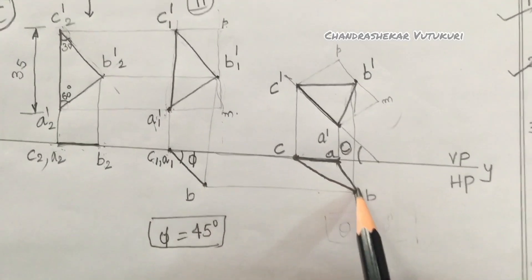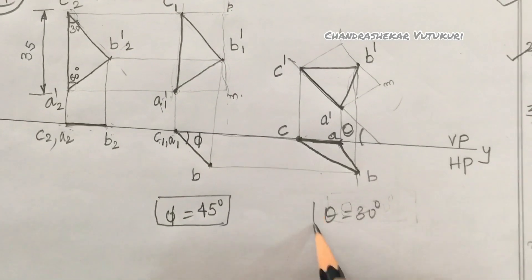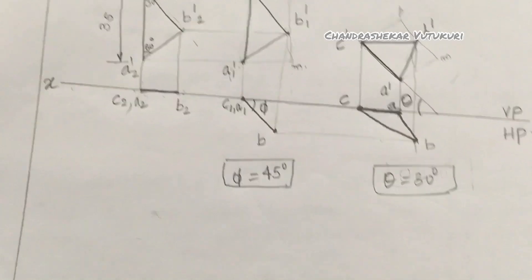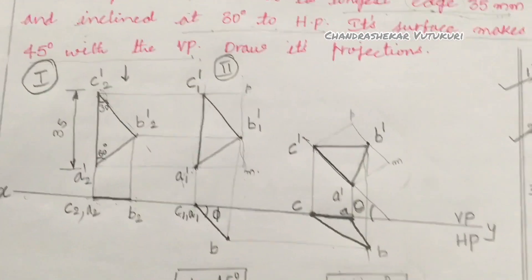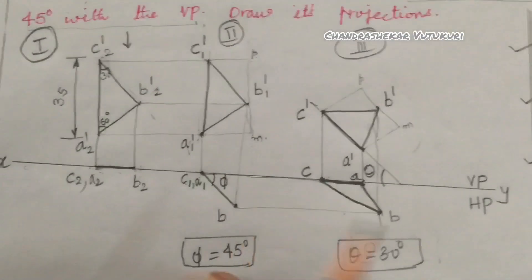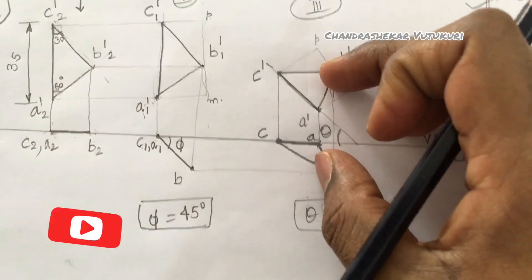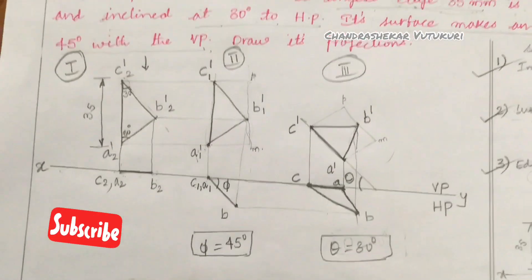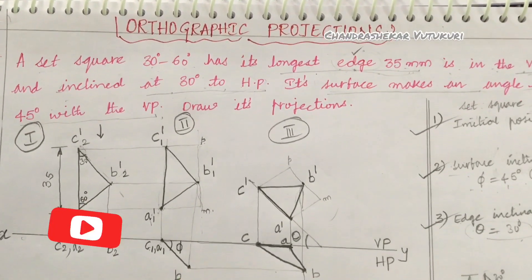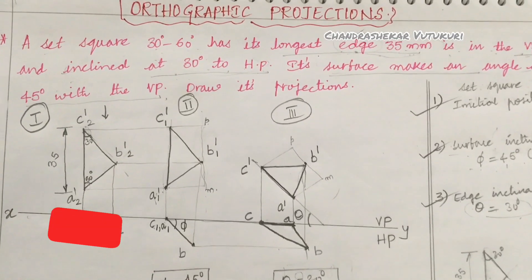Highlight the final views of the given problem. The theta value is 30 degrees - a set square 30-60 degree inclined to both HP and VP. This is our third step. The first and second steps should be drawn very lightly, and only the third step - both top view and front view - should be drawn in HB pencil. I hope you understand; please subscribe and share this content with your friends. Good luck.